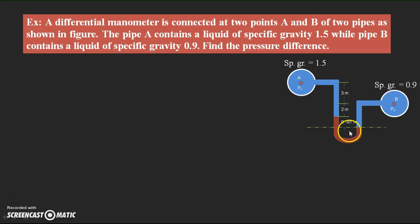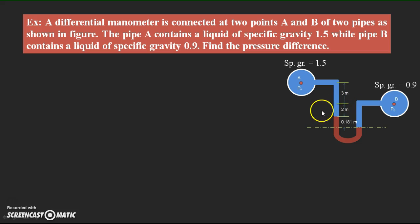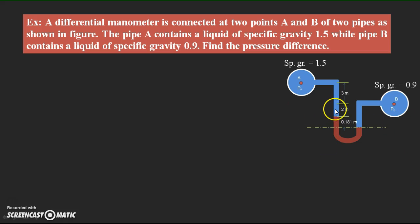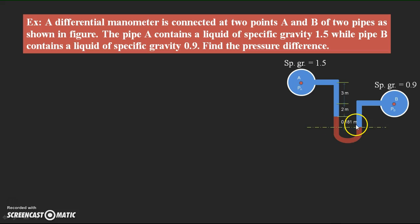By observing the figure, we can directly say where the maximum pressure takes place. Whenever this manometer is connected to the two pipes, where the fall of liquid has taken place, maximum pressure acts, and where the rise of liquid takes place, minimum pressure acts. This means the pressure at pipe B is more than the pressure at pipe A — that is, PB is greater than PA.